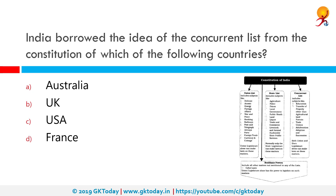India borrowed the idea of the concurrent list from the constitution of which of the following countries? The correct answer is Australia. The concurrent list or List III of the 7th Schedule is a list of 52 items in the Constitution of India, which includes powers to be considered by both the central and state governments.